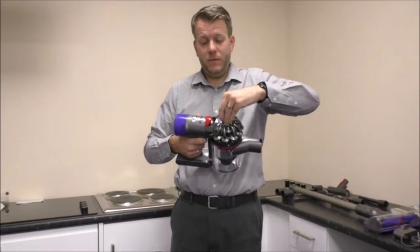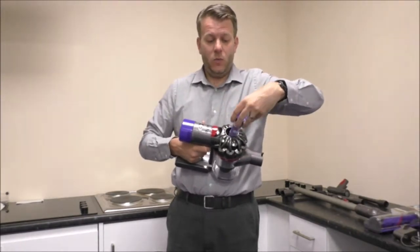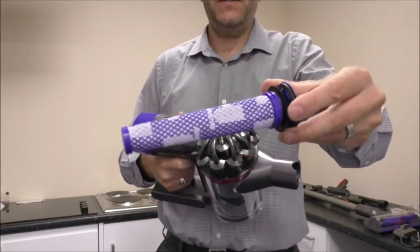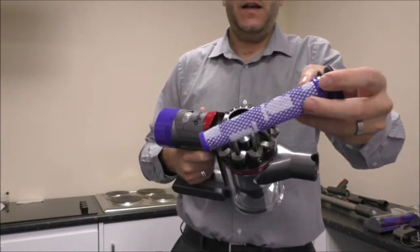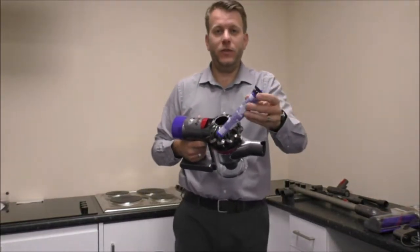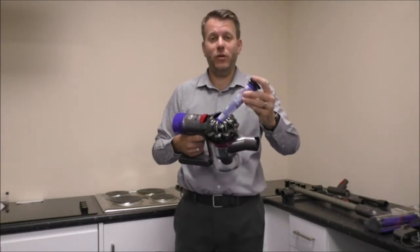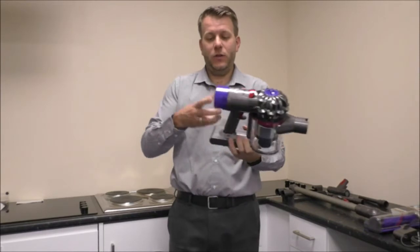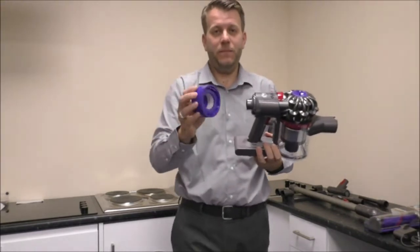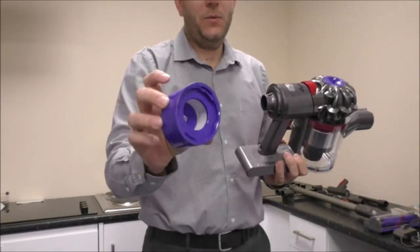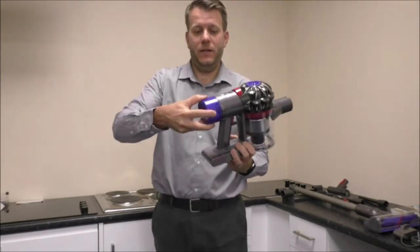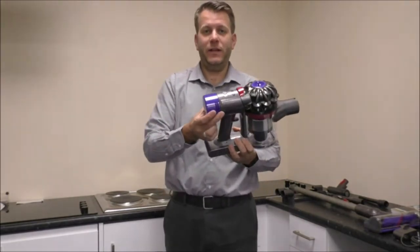While we're on the subject of the filter you've got one at the top here. That is washable, just rinse that under water, let it dry for 24 hours once you've washed it. You have to let that dry properly if not you can damage the vacuum. And you've got another filter on the back and that one again it's easy to take off, it just unscrews from the back and just locates back on there.